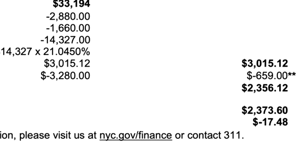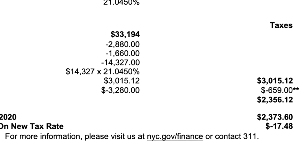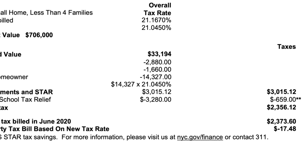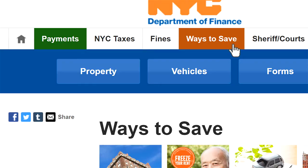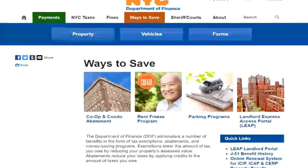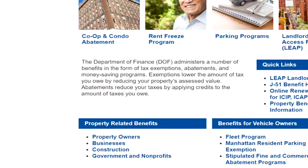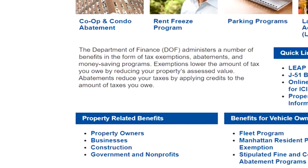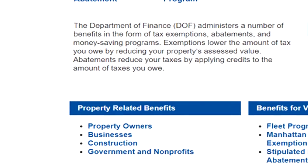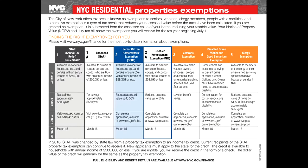If the owner lives in a co-op, the public record does not reflect their unit information, so they should check with their managing agent or contact the Department of Finance for that information. Now let's find out more about who is eligible for these savings. This information is located on our Ways to Save page. Ways to Save lists a number of programs for the city, but we want to look at property-related benefits for property owners, also referred to as homeowners' tax benefits. This chart lists all of the personal property tax exemptions New York City residents can qualify for.